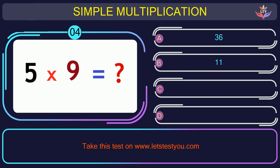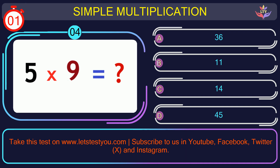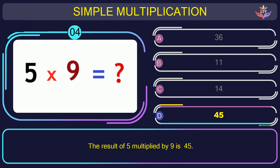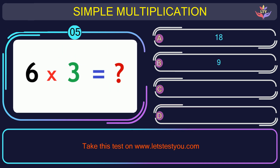Question number 4: could you guess the result when you multiply 5 and 9? The correct answer is option D: 45. The result of 5 multiplied by 9 is 45.